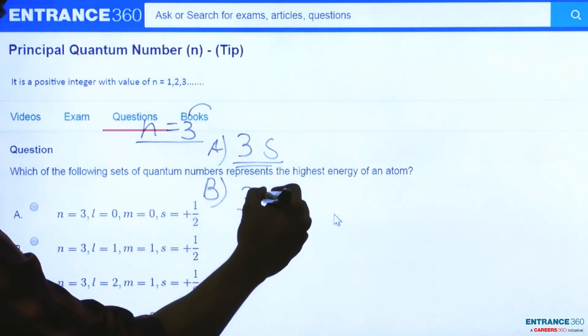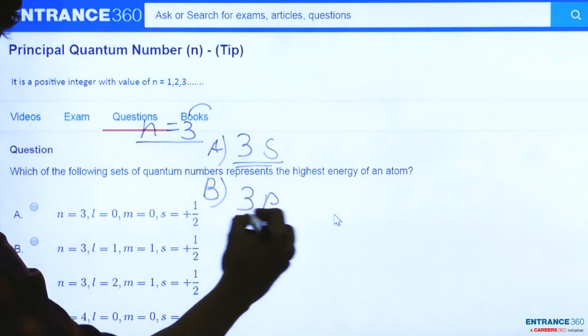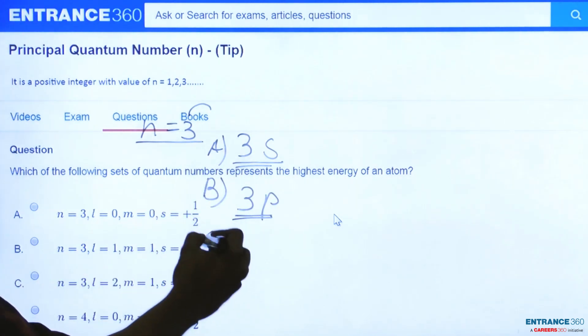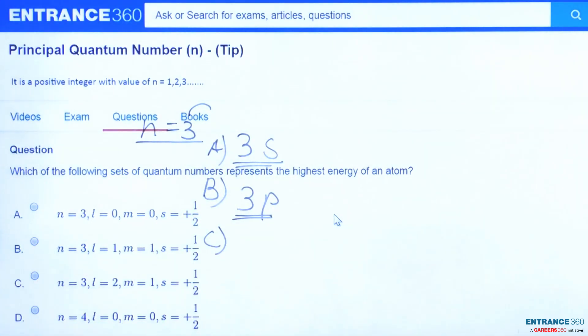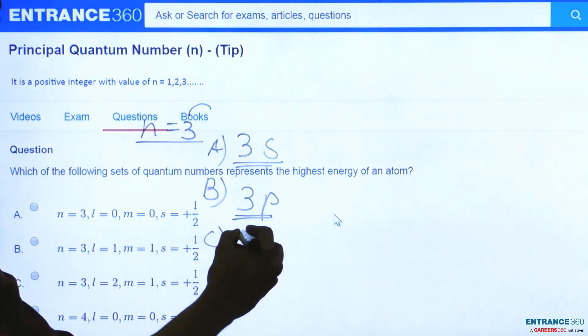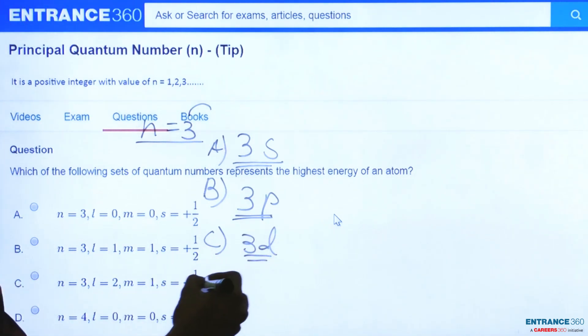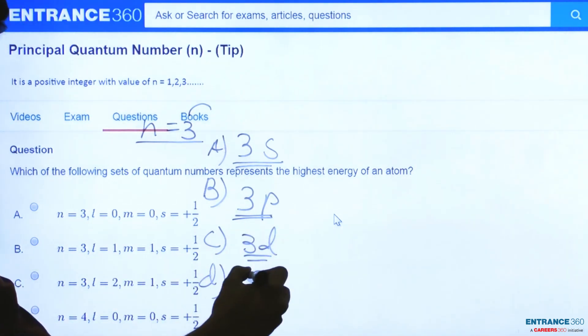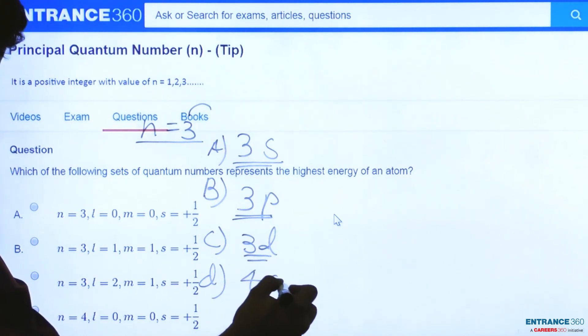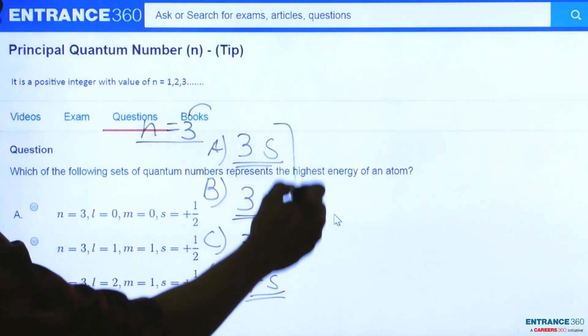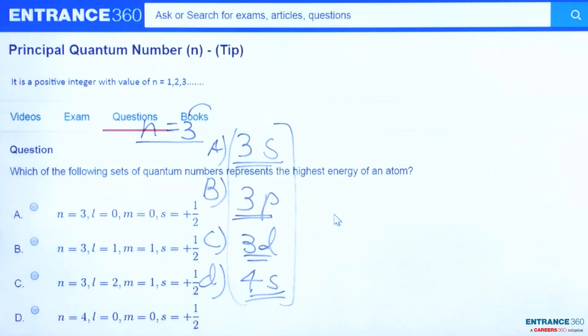For the C option, we have n equals 3 and l equals 2, so this will give us a 3d orbital. And for the last option, we have 4s orbital. These are the four orbitals and we have to find their order of energy.